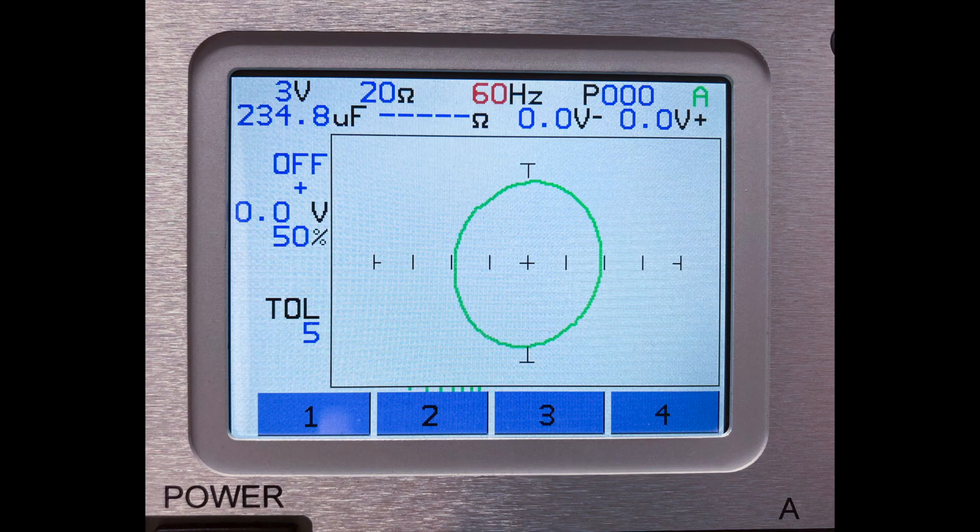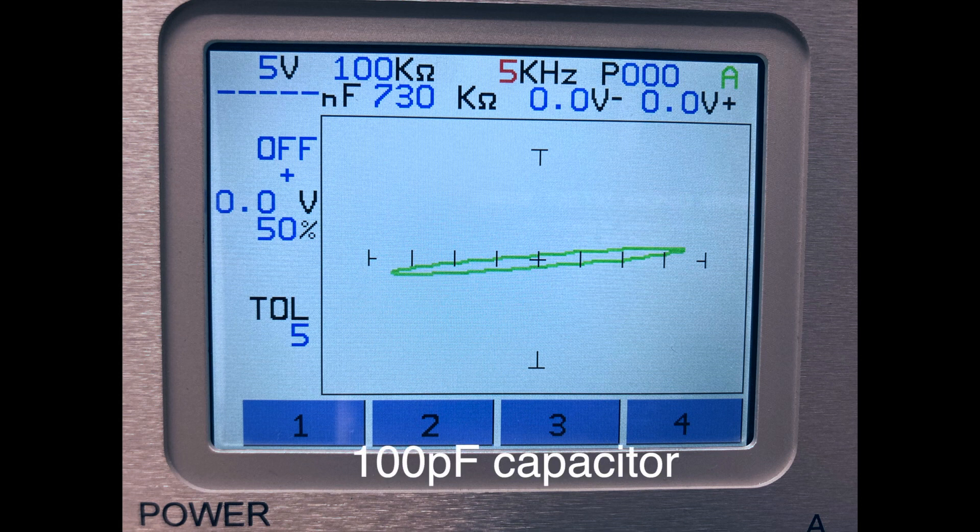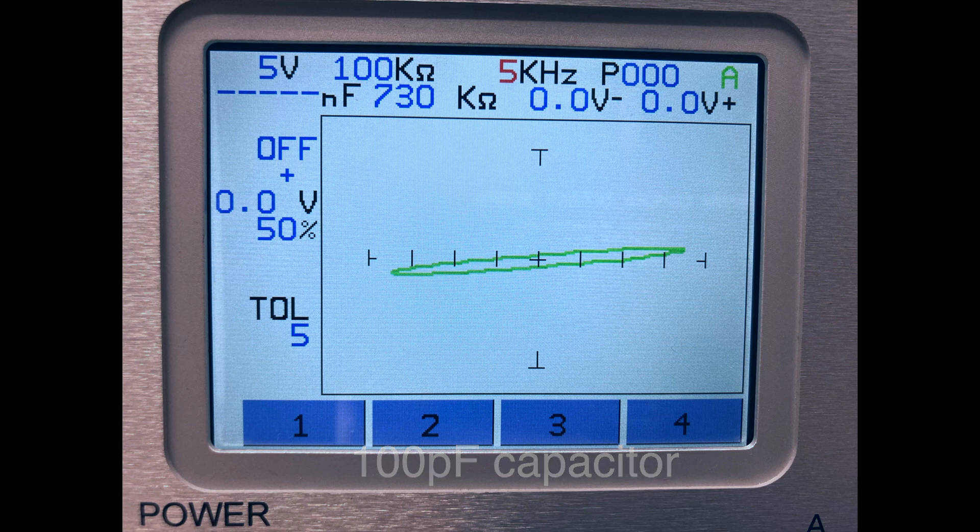As the capacitor value decreases, the resistance and frequency range settings increase to provide descriptive signatures. Here is a 100 picofarad capacitor using the 100k ohm resistance and 5kHz frequency settings.